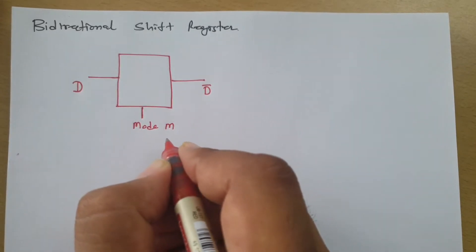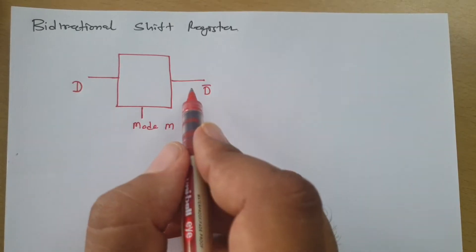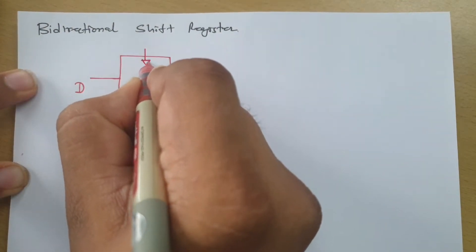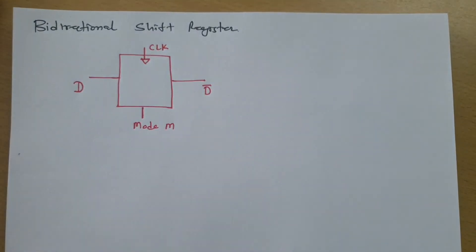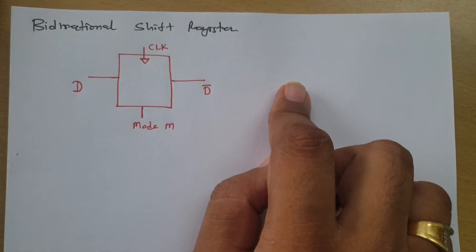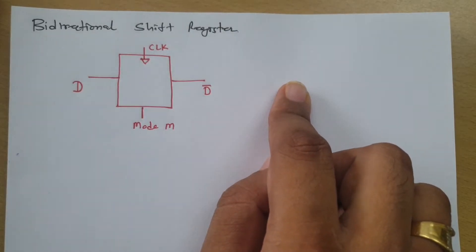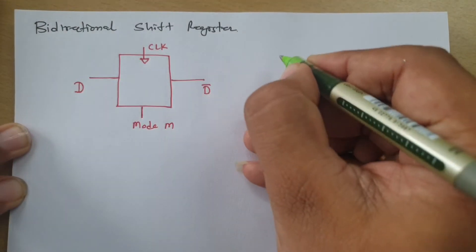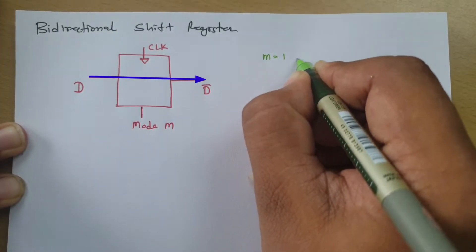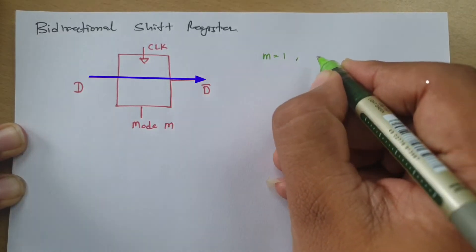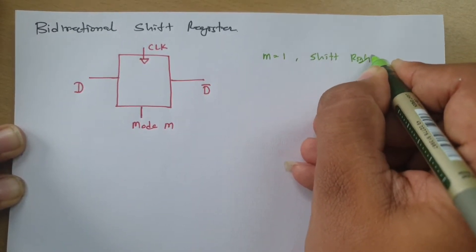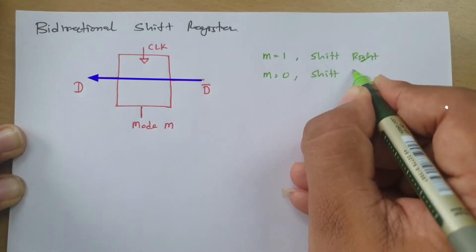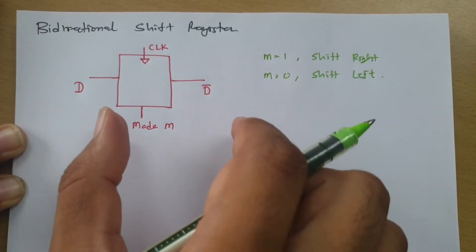If M equals 1, data shift will be happening in the right direction. And if M equals 0, data shift will happen in the left direction. That shifting of data will happen with respect to clock. So if M equals 1, shift right will happen. Then if M equals 0, shift left will happen. That is how the basic block works.